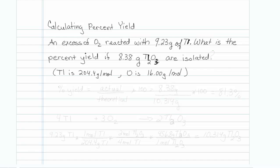This is how to calculate a percent yield. An excess of O2 reacted with 9.23 grams of thallium (that's capital T, lowercase L). What is the percent yield if 8.38 grams of Tl2O3 are isolated? We're given the molar masses.